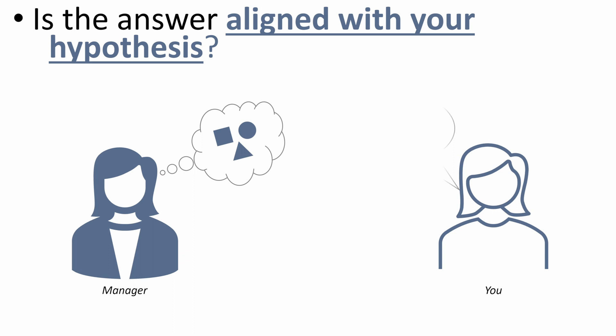If you show up with an answer that is different from your expectation, that's fine, but you should understand why and have a reasonable explanation for how your answer may differ from your original expectations. This will be critical, as your manager will frequently have their own expectations in mind. When you show up with something different, it can lead to confusion and unnecessary iterations if you're not able to effectively communicate and explain why your answer differs from your hypothesis.